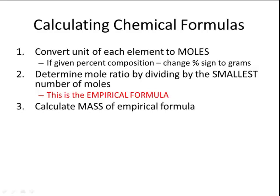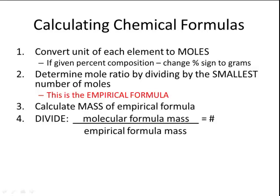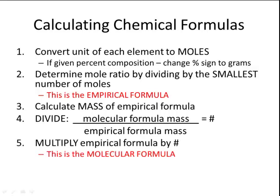First, calculate the mass of the empirical formula. Then compare the molecular formula mass to the empirical formula mass. Since the molecular formula shows the actual number of atoms and the empirical formula shows the ratio, the molecular formula mass divided by the empirical formula mass will always produce a whole number. Take that whole number and multiply it times the empirical formula to get the molecular formula.